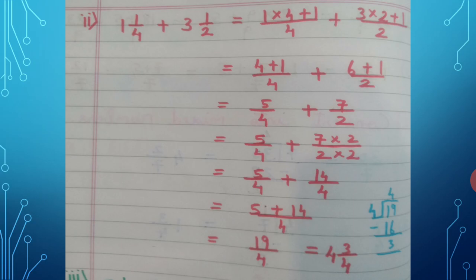1 × 4 is 4, plus 1 upon 4, plus 6 + 1 upon 2, giving 5 upon 4 plus 7 upon 2. The denominators are different, so we equalize: keep 5 upon 4 as it is and multiply 7 upon 2 by 2 to get denominator 4.